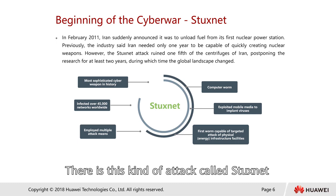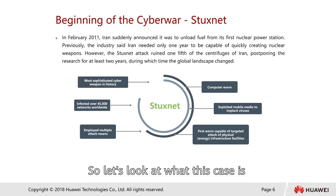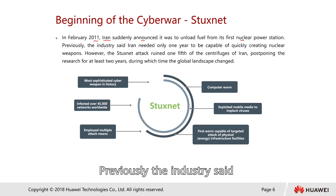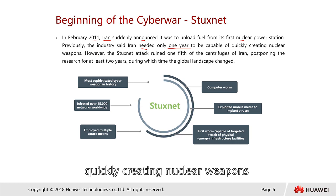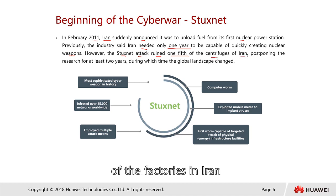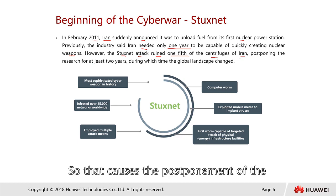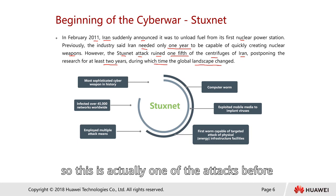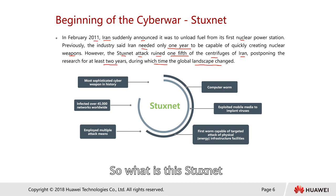This brings us to the beginning of cyber warfare, with an attack called Stuxnet. In February 2011, Iran announced it was unloading fuel from its first nuclear power station. Previously, the industry said Iran would only need one year to be capable of creating nuclear weapons. However, the Stuxnet attack ruined one-fifth of the centrifuges at that facility, postponing their research by at least two years, during which the global landscape changed.